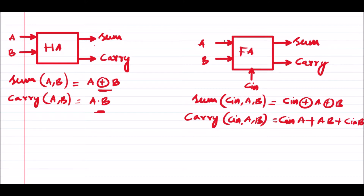We also discussed the full adder, where a full adder is a 3-bit adder. Along with inputs A and B, the carry input from the previous sum is also provided to the circuit. The output is sum and carry. The sum equation developed was: sum = Cin XOR A XOR B, and the carry equation was: Cin·A + A·B + Cin·B.